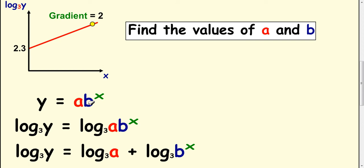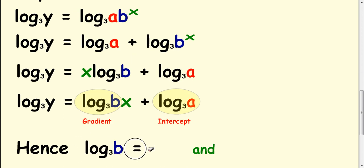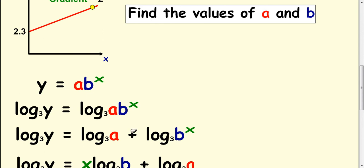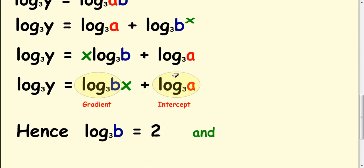We know our gradient's 2, so that's going to equal 2, this bit at the front. And we know our intercept's 2.3, so that part's going to equal 2.3.